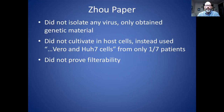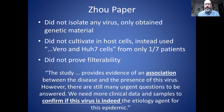The Zhao paper: no virus isolated — they obtained genetic material. They did not cultivate in host cells, using Vero cells and HUH7 cells, and only in one of seven patients. They did not prove filterability. Importantly, their own conclusion stated: 'This study provides evidence of an association between the disease and the presence of the virus. However, there are still many urgent questions to be answered. We need more clinical data and samples to confirm if this virus is indeed the etiological agent for this epidemic.' So the authors themselves acknowledged this only shows association, not causation — an honest conclusion.